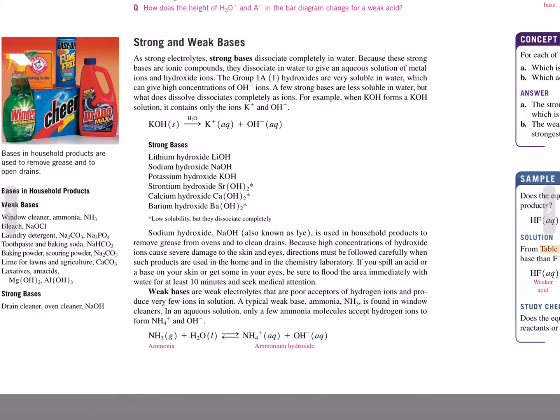Strong and weak bases: As strong electrolytes, strong bases dissociate completely in water. Because these strong bases are ionic compounds, they dissociate in water to give an aqueous solution of metal ions and hydroxide ions. The Group 1A hydroxides are very soluble in water, which can give high concentrations of hydroxide ions. A few strong bases are less soluble in water, but what does dissolve dissociates completely as ions. For example, when potassium hydroxide dissolves, it forms a solution containing only potassium and hydroxide ions.